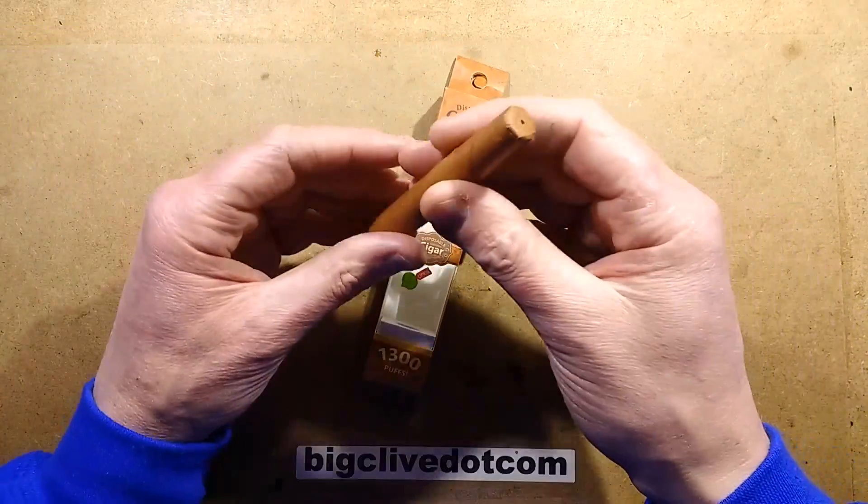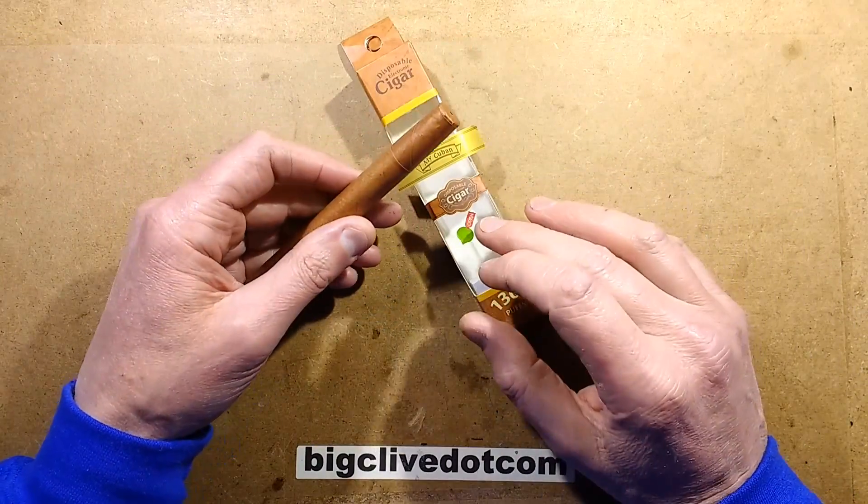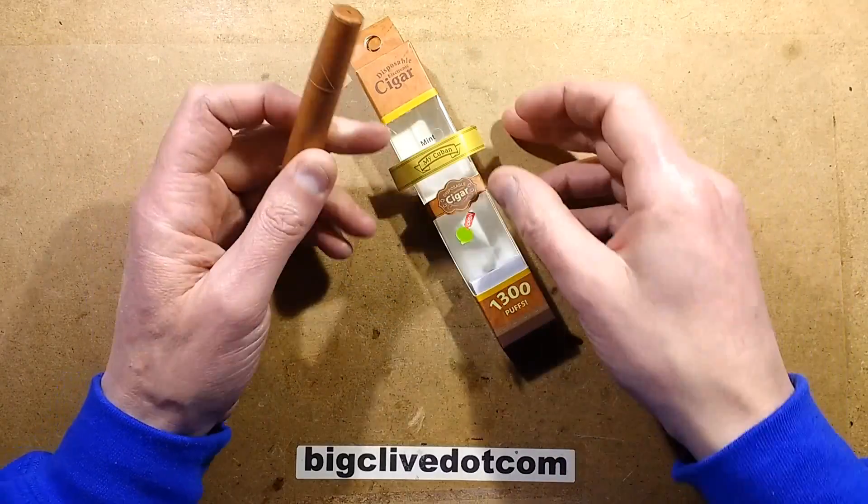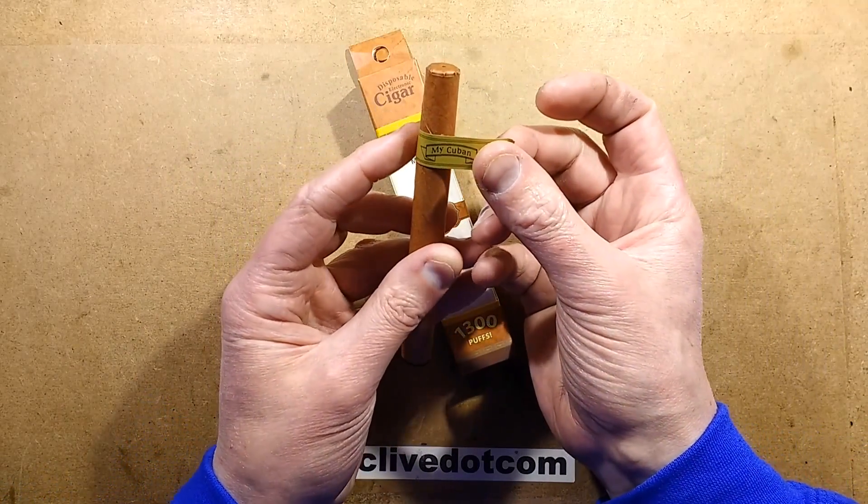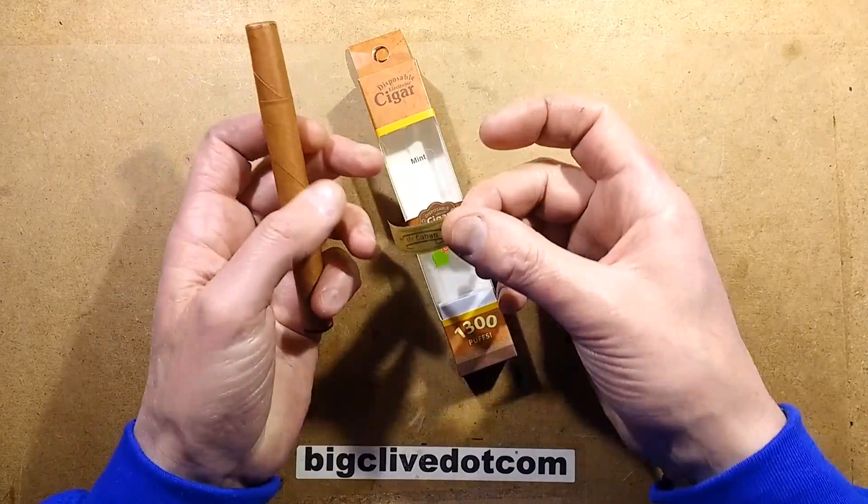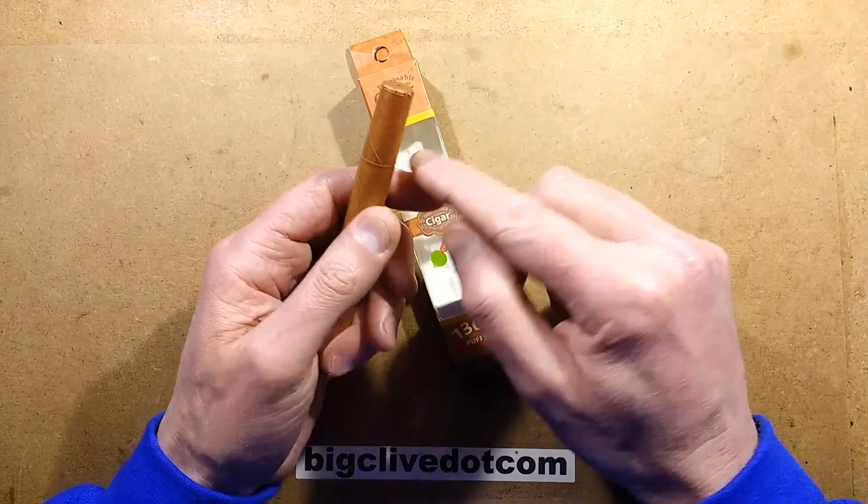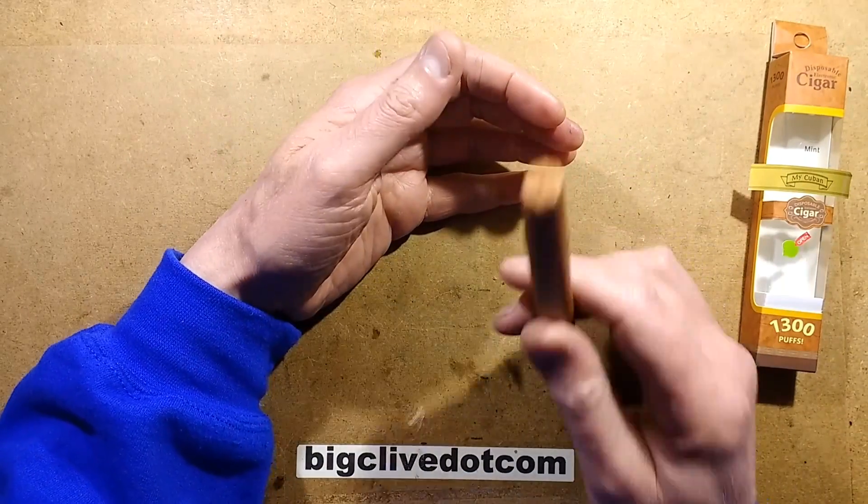And it's notable that when it originally came out of the package, there's a little sticker covering the mouth hole, and also this was floating loose. Looking at the picture, it's supposed to be wrapped around there, presumably to hide the fact that there is a little joint. And this one is mint flavour, and I have to say it's quite nice.